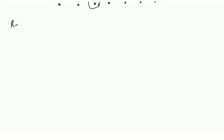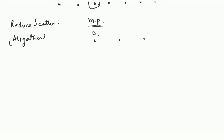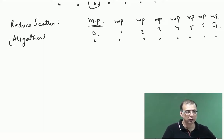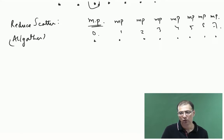Let us move to the next set of collectives. We are going to talk about reduce scatter, and the dual of that is all gather. So how does reduce scatter work? Everybody has MP data — this is a reduce. Everybody has MP amount of data, and what you want to do is find the element-wise summation of these MP elements, and you want the result to be scattered across all the nodes.